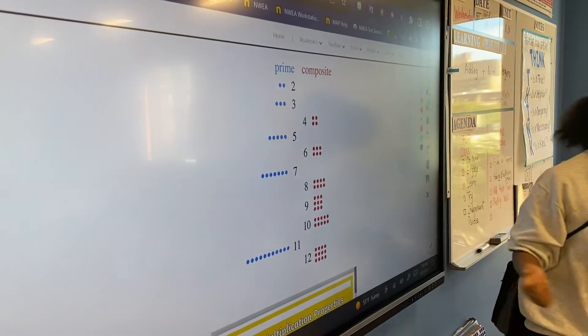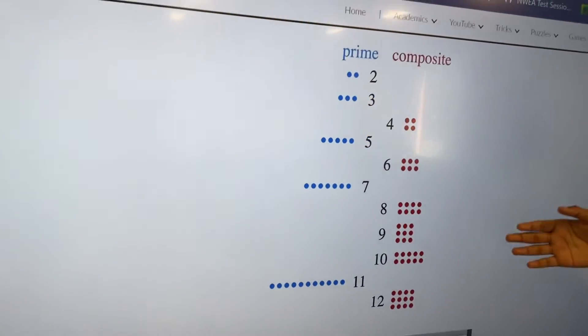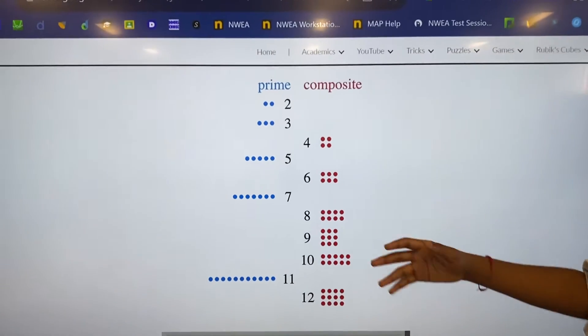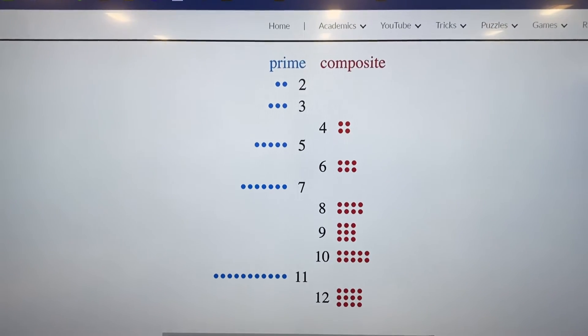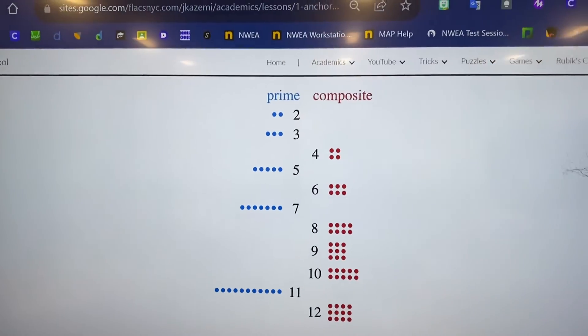So what I want y'all to do so that you can fully remember this, which helps me, is to take notes. So basically just try to copy. You don't have to copy it all down, but copy as many as you can down. And make sure you put prime and composite so you can tell which one's which.